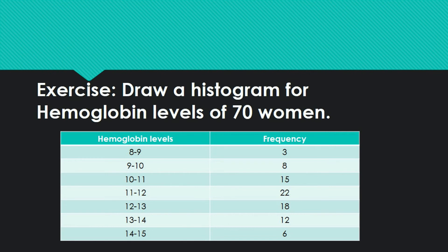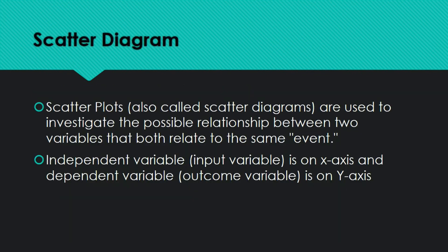Exercise: Draw a histogram for the hemoglobin level of 70 women. Hemoglobin ranges are given with their frequencies, for example intervals like 8–9, 9–10, 10–11. Use the reverse-L axis technique when drawing by hand. Software will do it automatically. This technique is important for when you don't have software available.